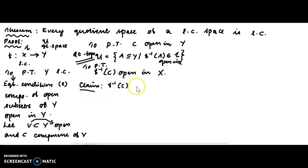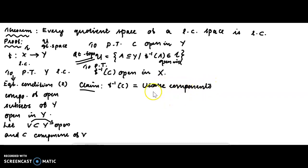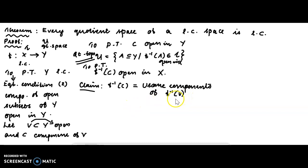Claim: f-inverse of C equals the union of some components of f-inverse of V. We can write f-inverse of C as a union of some components of f-inverse of V. We will prove this claim.